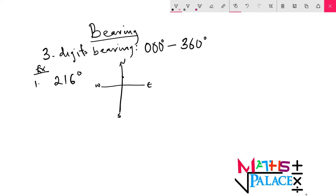From the north to the east is 90 degrees. From east to south, another 90 degrees, making it 180 degrees. Now, if I have 180 from north to south, what do I need to add to 180 to complete 216? I need 36. So I will add 36 from here. Remember, every quadrant is 90 degrees. So I have 90, 90, and 36 degrees.